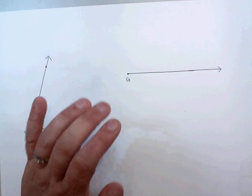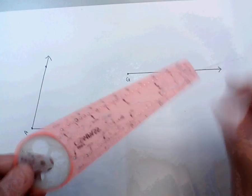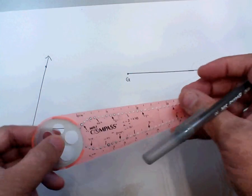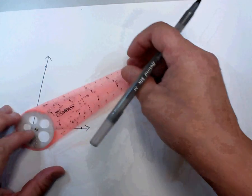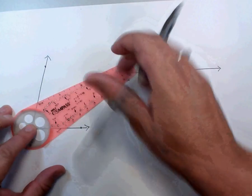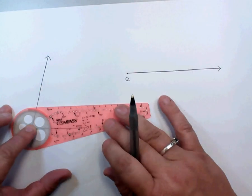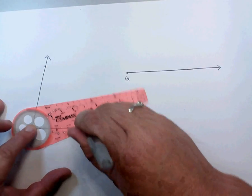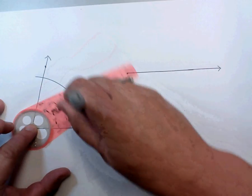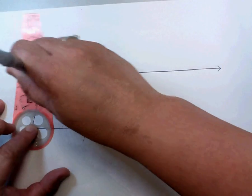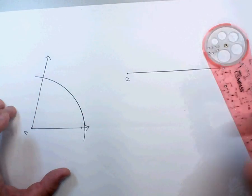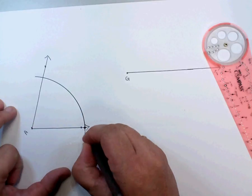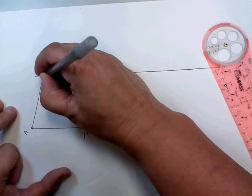We're going to start by taking our safety compass and we're going to put the brass ring at point A. And we're going to draw a pretty good sized arc that is going to intersect both of the legs of the angle. And we're going to name those two intersection points. We're going to name this one B and we're going to name this one C.